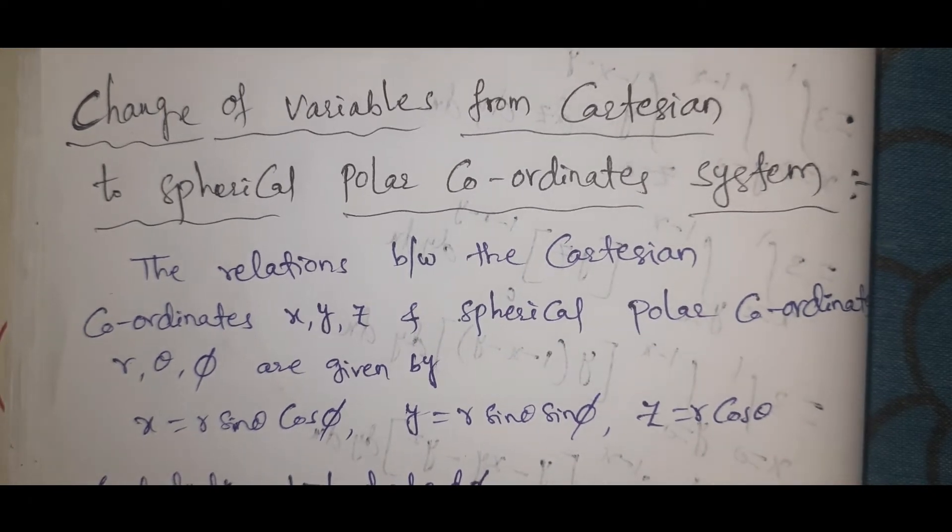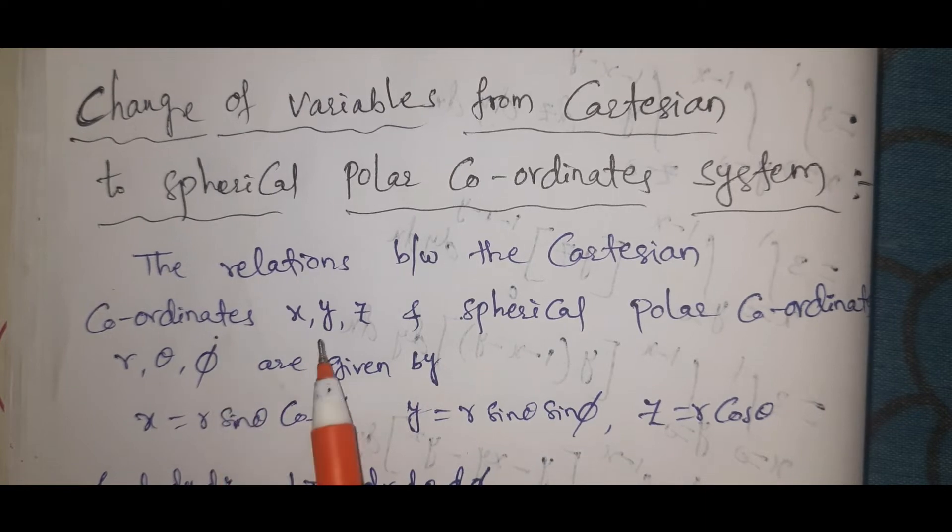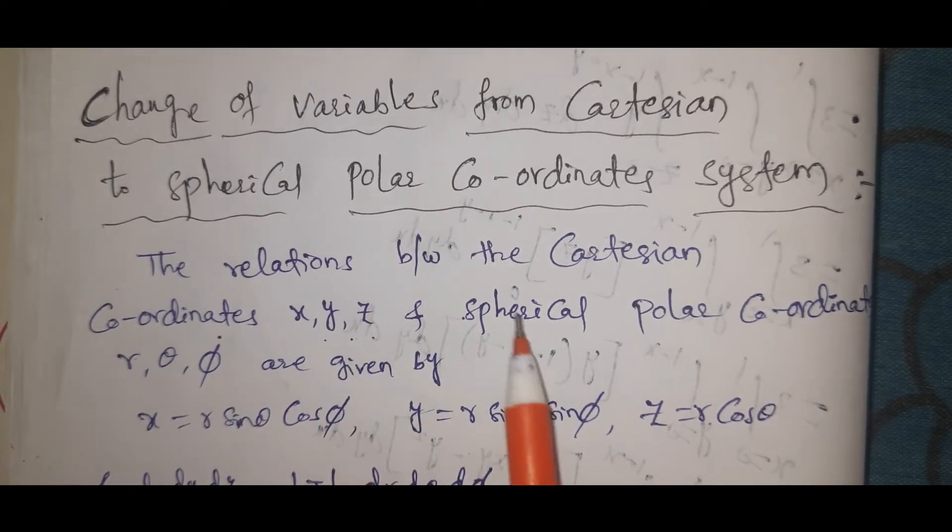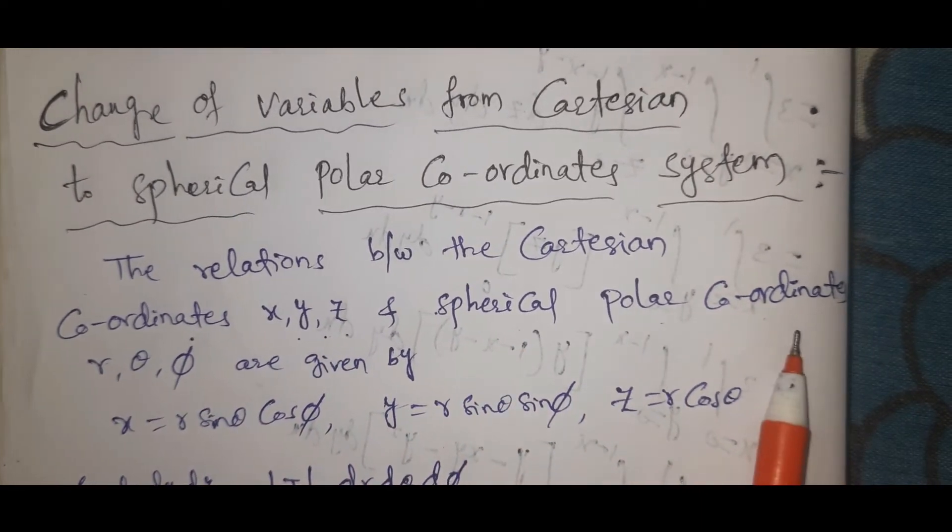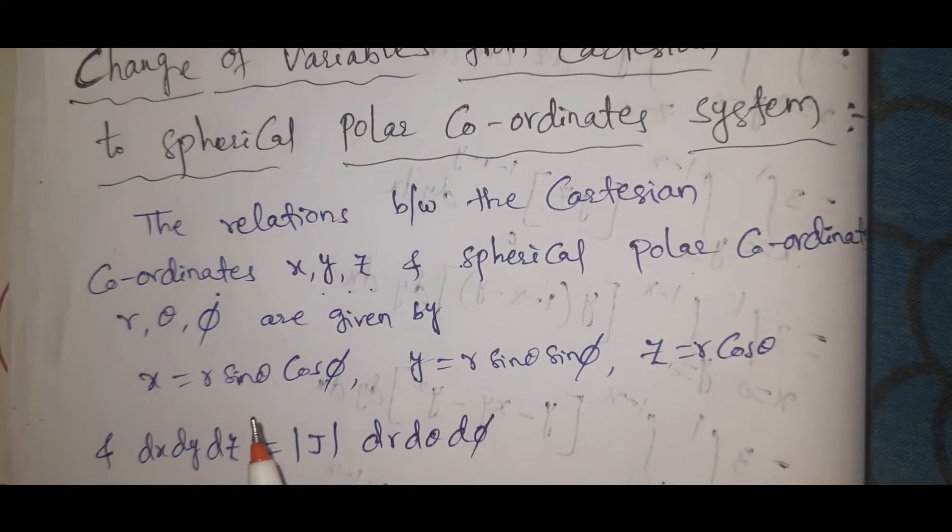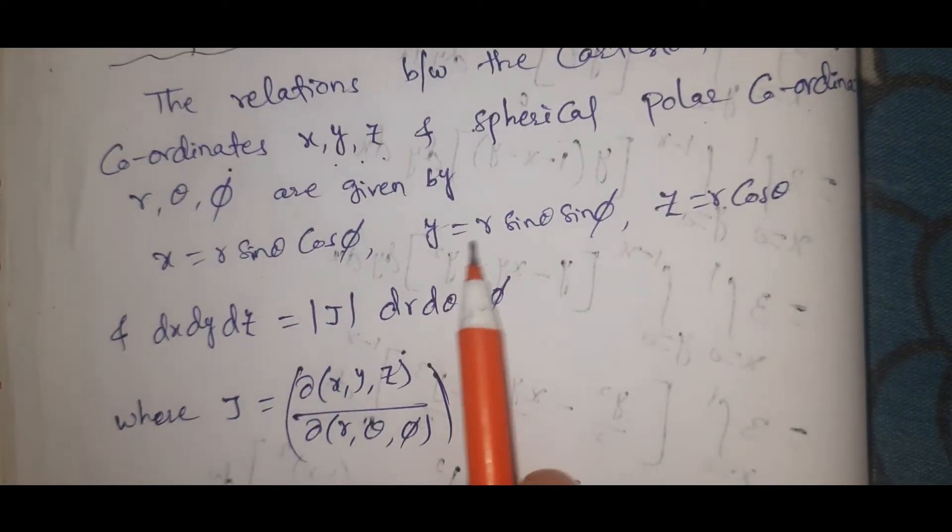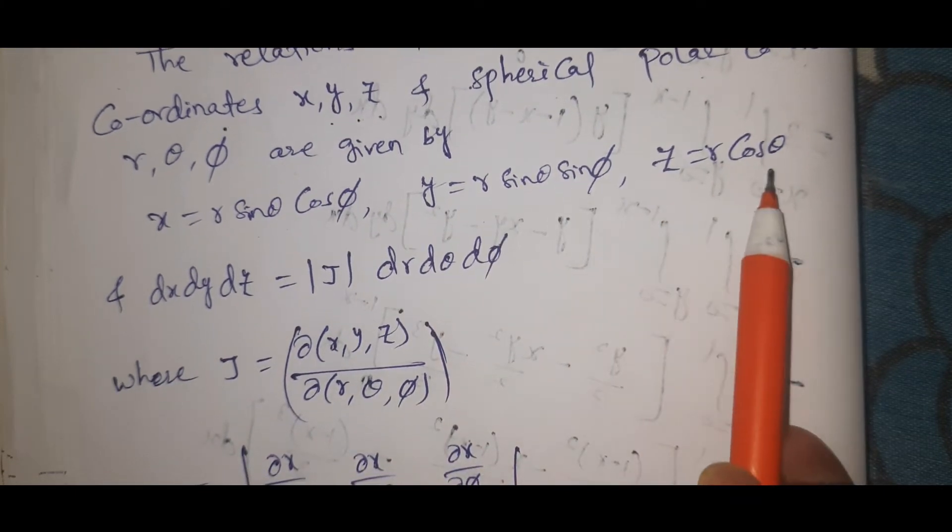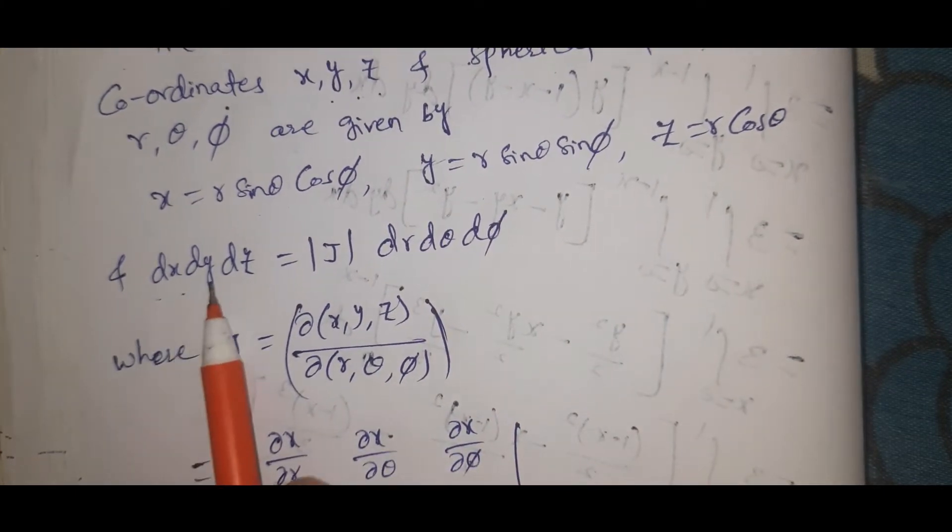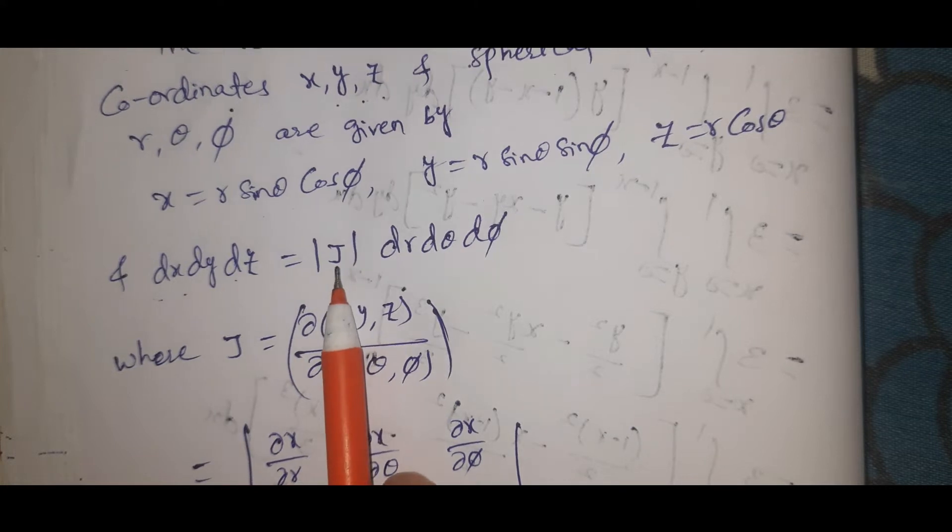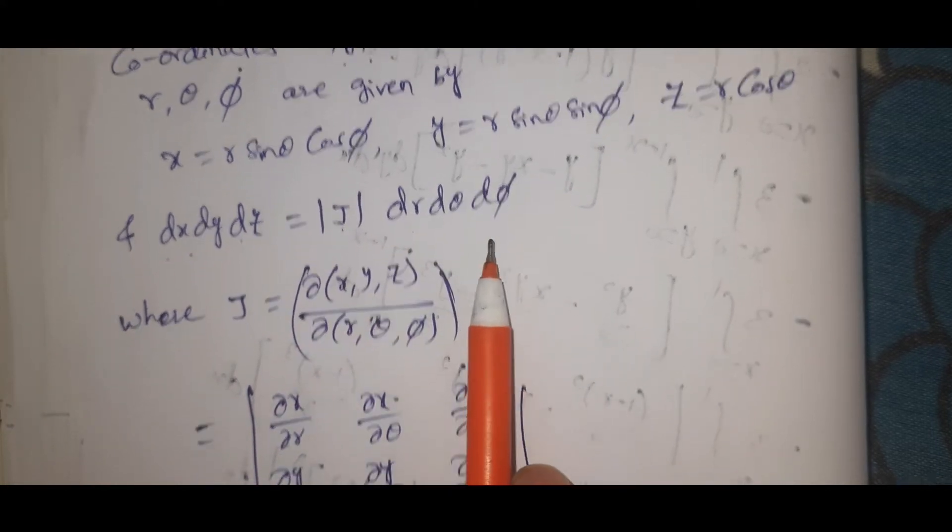The relation between the Cartesian coordinates X, Y, Z and Spherical Polar Coordinates R, Theta, Phi are given by: X = R sin theta cos phi, Y = R sin theta sin phi, Z = R cos theta, and dX dY dZ = |J| (Jacobian) dR dtheta dphi.